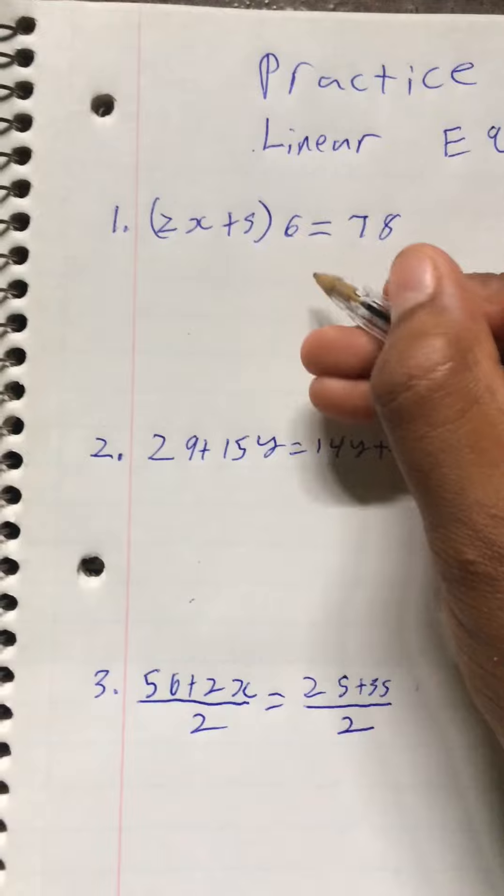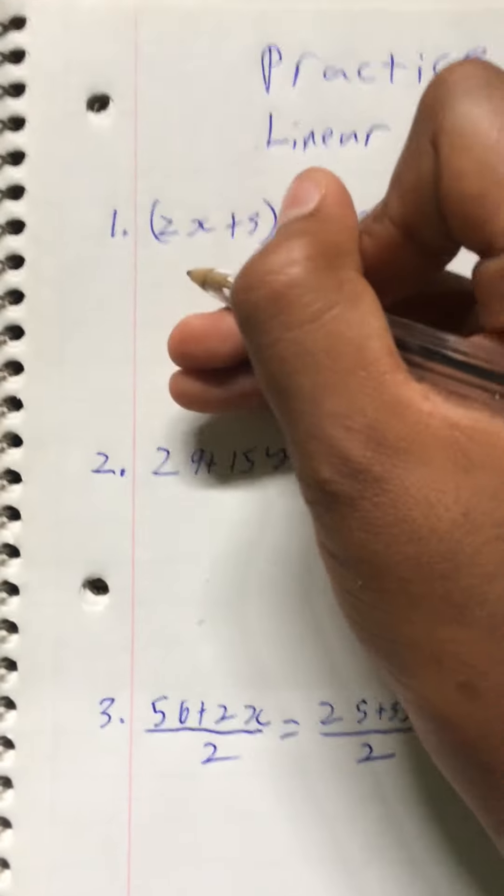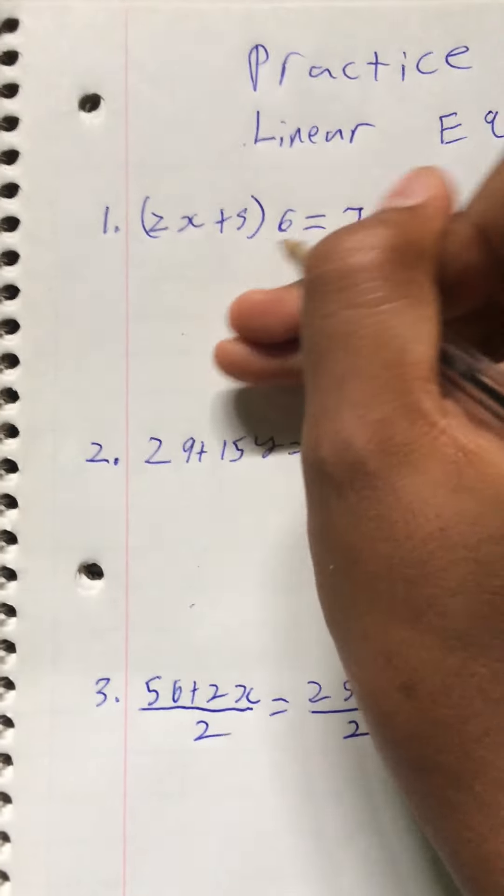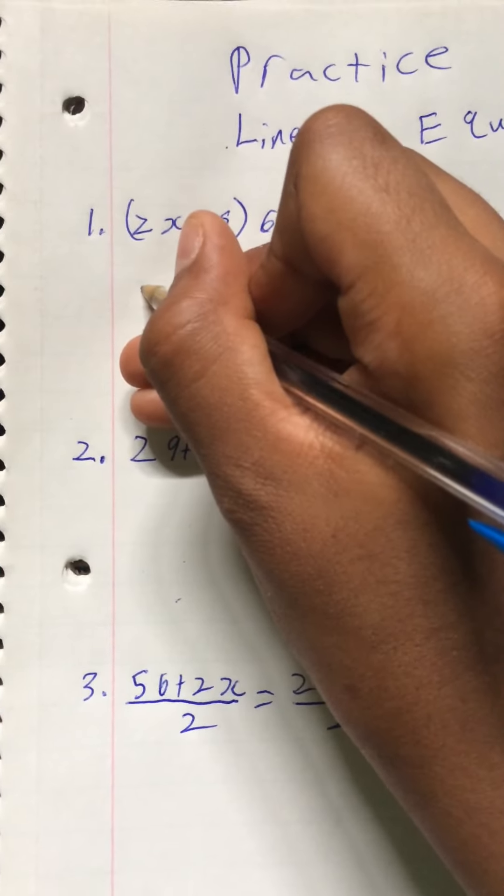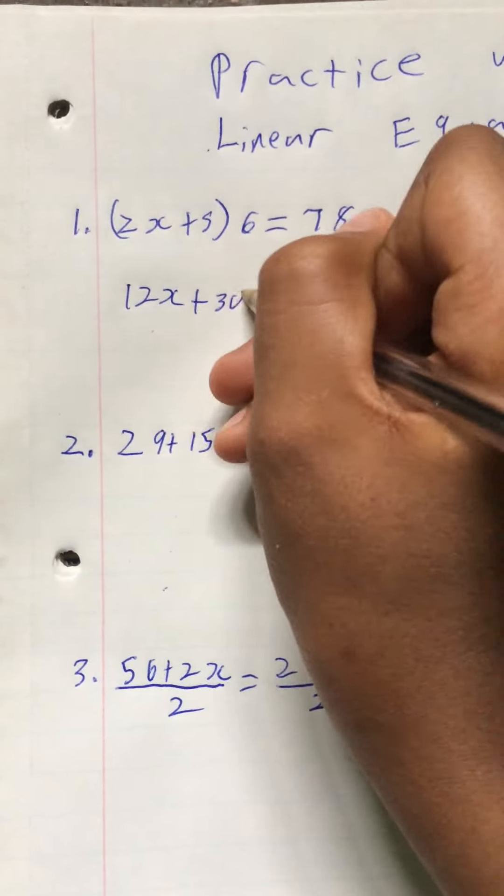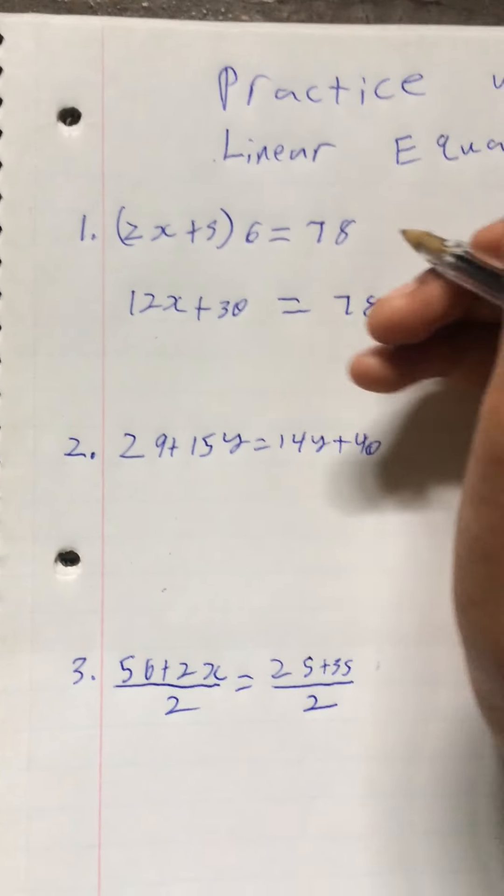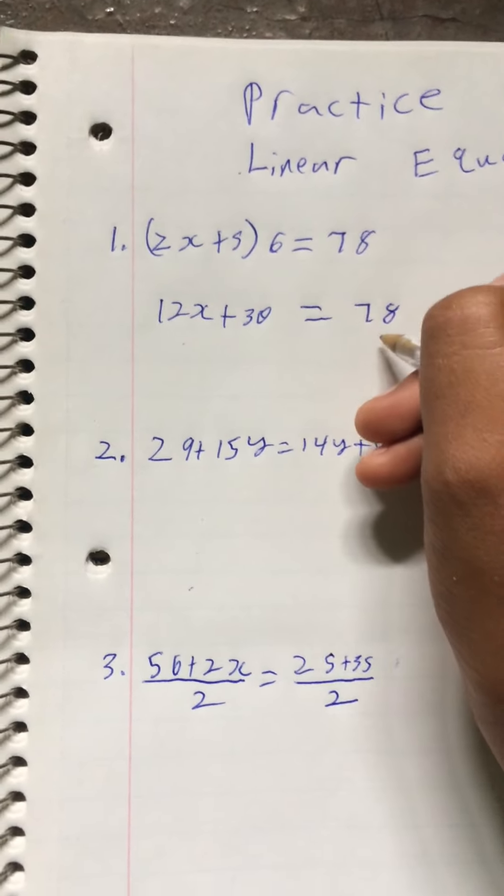So 2x plus 5 times 6 equals 78. What we could do here first is expand the parentheses. So that would mean 2x times 6 is 12x, plus 5 times 6 is 30. That would equal 78. So then minus 30 on both sides.